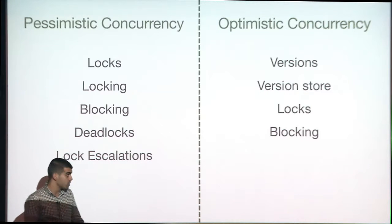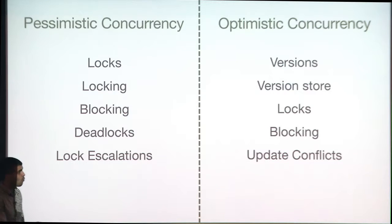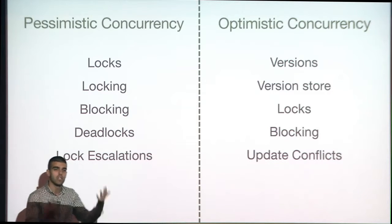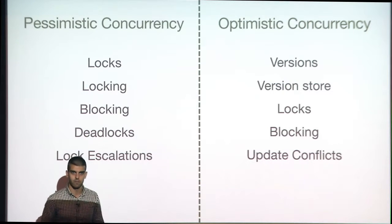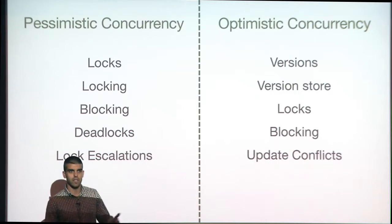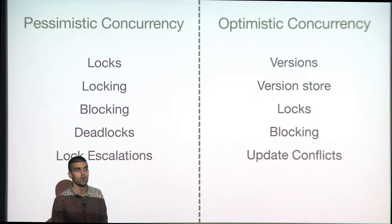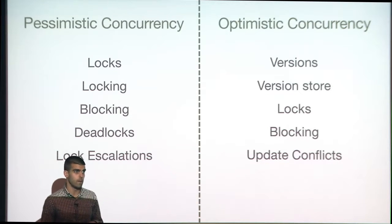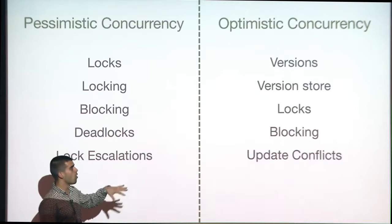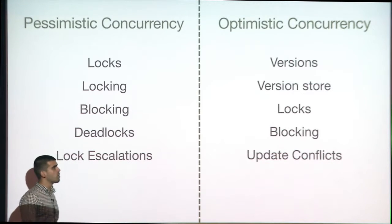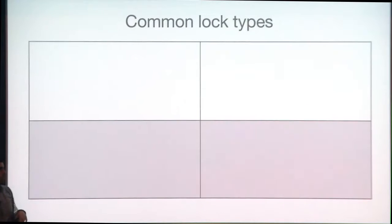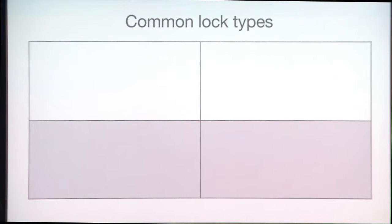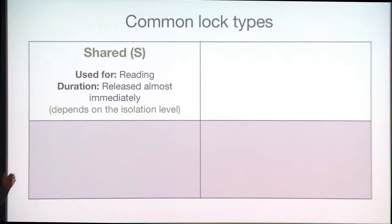In optimistic concurrency we can also face so-called update conflicts, which you'll see in the demos. Now, the most frequently seen lock types: the shared lock is placed when we're reading a resource, and it means that resource is locked until we complete the read.